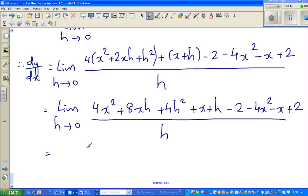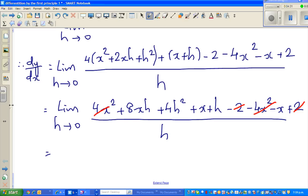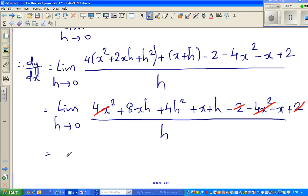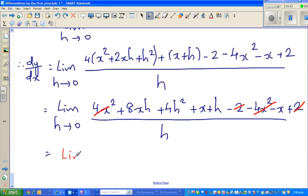Now let us do the cancellation. So what can we cancel? This is 4x squared minus 4x squared gets canceled. This is minus 2 and plus 2 can get canceled. Can we cancel anything else? I don't think so. So this will become, again, limit when h approaches 0.